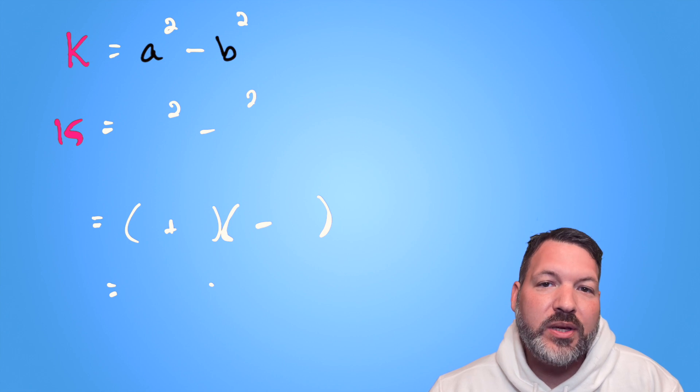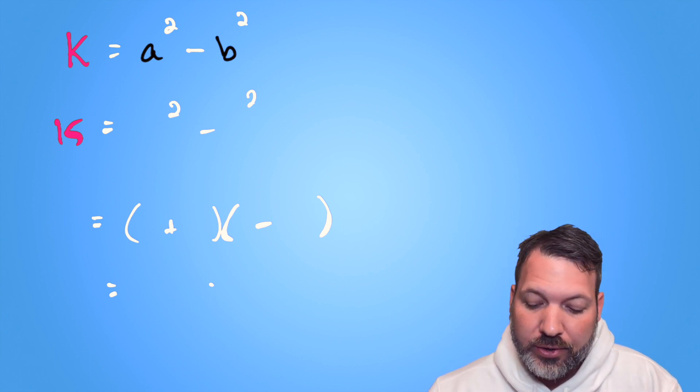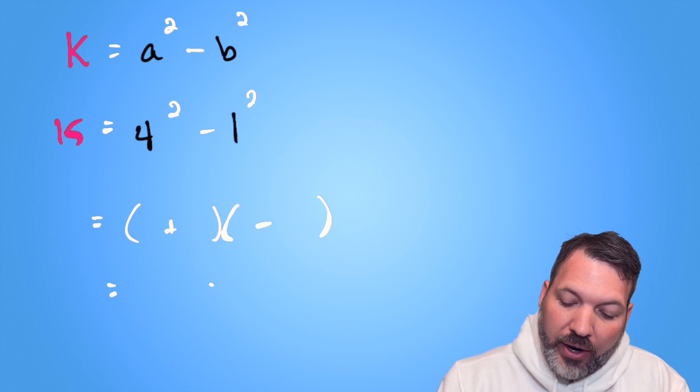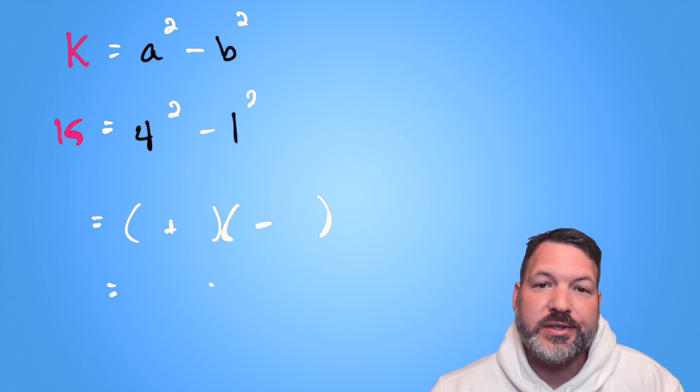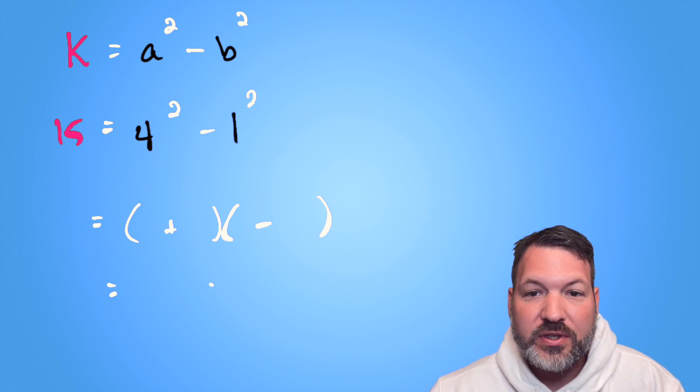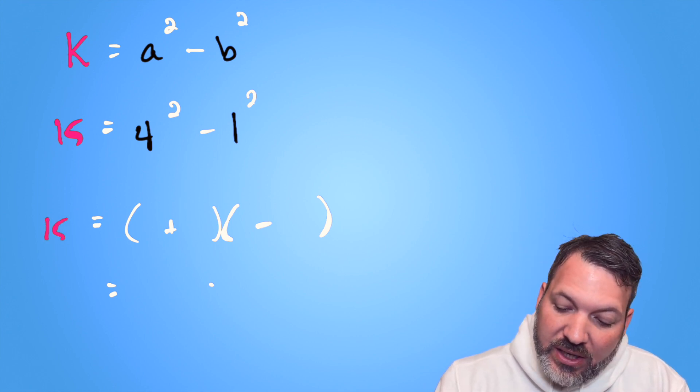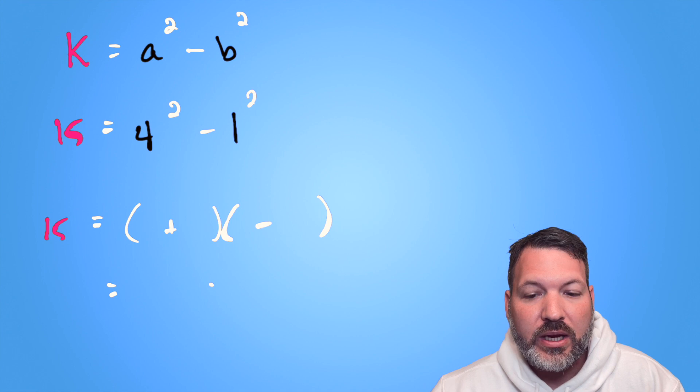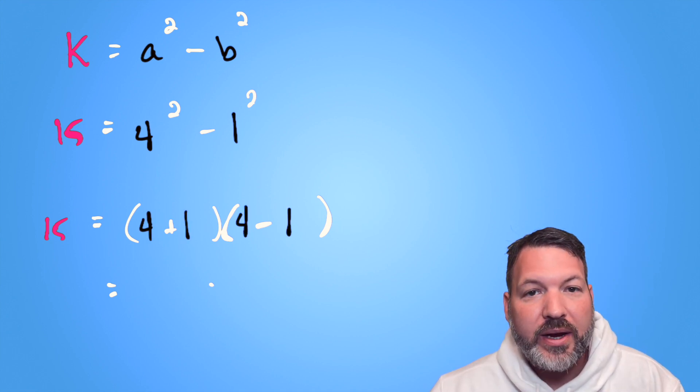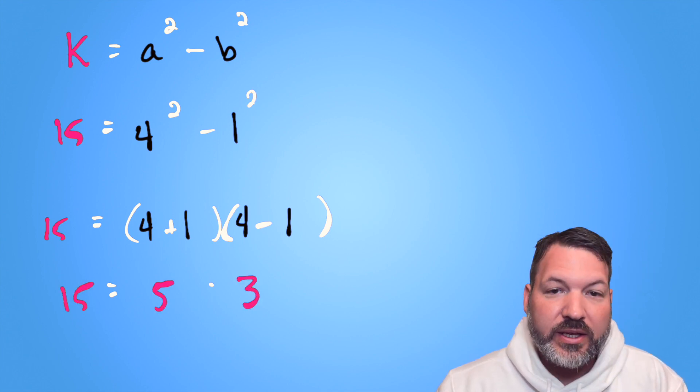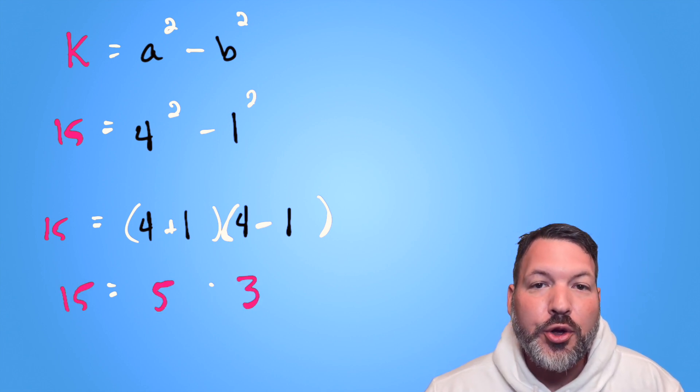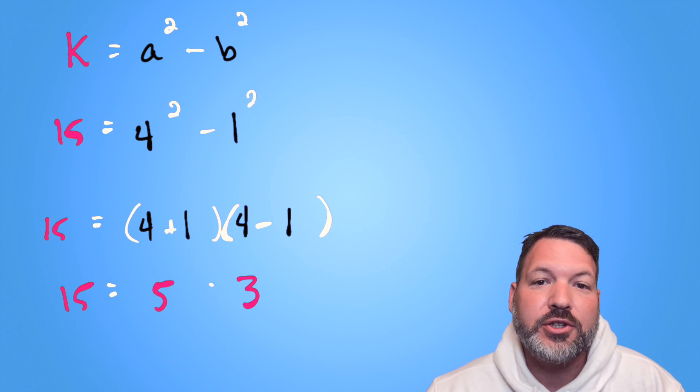But eight and seven are not the only perfect squares that have a difference of 15. You could also choose, for example, four squared and one squared. Four squared is 16. One squared is one. 16 minus one is also 15. And this leads us to a different factorization for 15. We can write this as the sum four plus one times the difference four minus one. Four plus one, of course, is five. Four minus one is three. And now we have a new non-trivial factorization of 15.